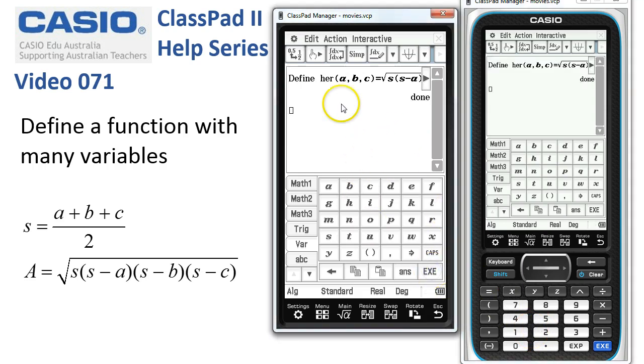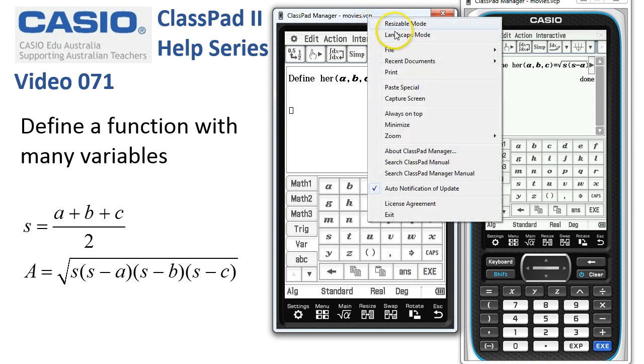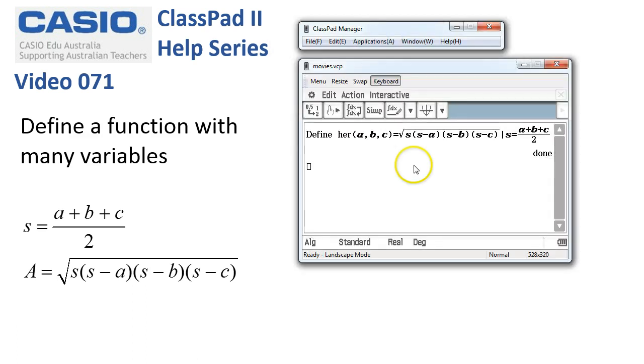So when we tap execute, fingers crossed, ClassPad says done. Now I'll just switch my calculator around here to landscape mode and here you can see exactly what we've done. We've defined this function given this.